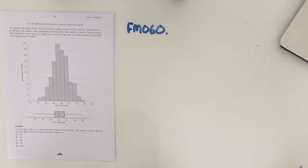Question FM60 reads: a total of 250 clocks were tested and their times were recorded. The number of times that lie between 59.5 seconds and 60.5 seconds is closest to what?